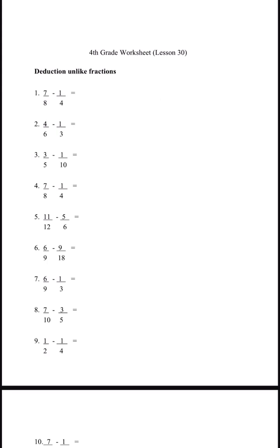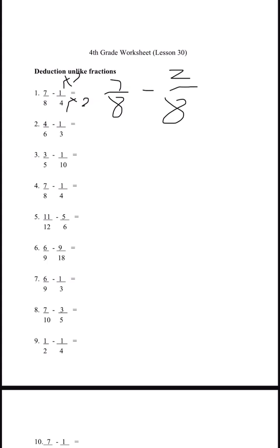7 over 8 minus 1 over 4. We need to make the denominator 8, so multiply the top and bottom. We write the equation and get 7 over 8 minus 2 over 8. 7 minus 2 is 5, so the answer is 5 over 8.